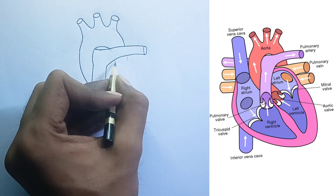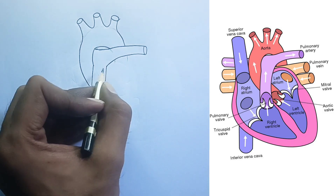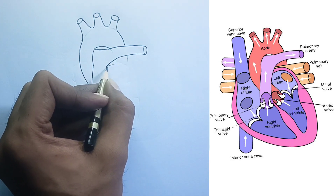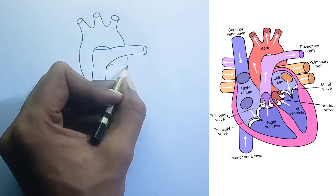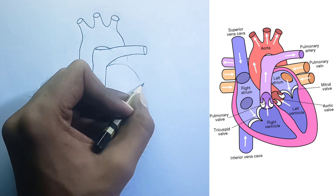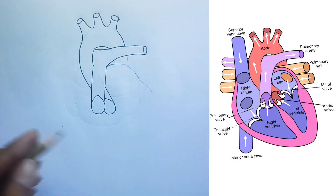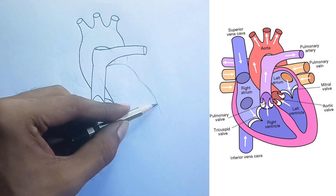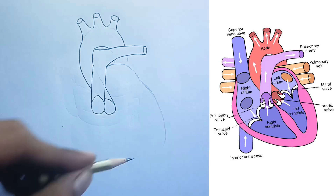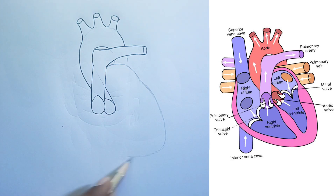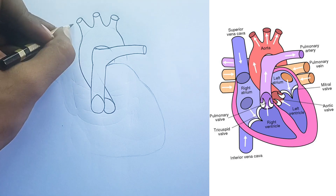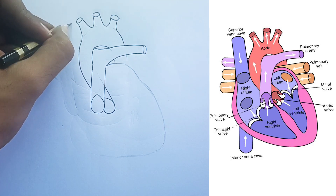Pulmonary vein: carries oxygenated blood from the lungs to the left atrium. Note: veins usually carry deoxygenated blood, but pulmonary veins are an exception. Aorta: the largest artery in the body, carrying oxygenated blood from the left ventricle to the rest of the body.